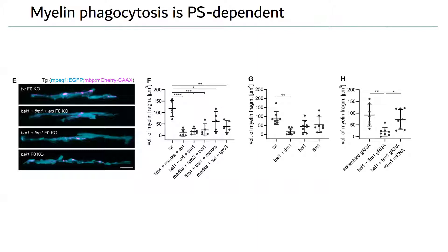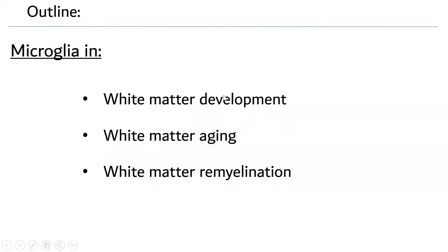To summarize this part: myelin development in both zebrafish and mice is error-prone, with pathological features that are cleared away by microglia in a PS-dependent manner. This happens in mice up to around age P21, and after P21 myelin looks normal. Nothing spectacular seems to happen to myelin until it starts to age, which in mice occurs around 18 months.